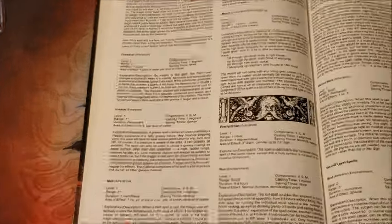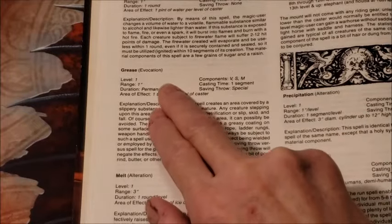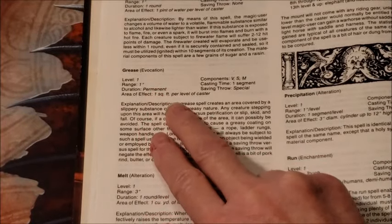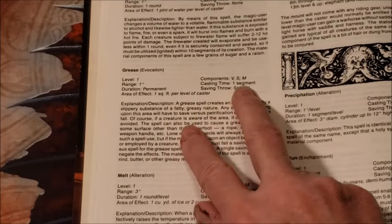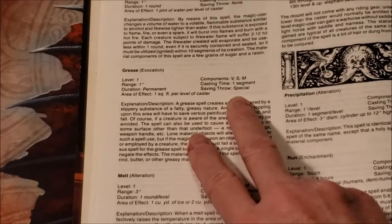We'll zoom in a little bit on it. So Grease is an evocation first level spell, range 10 feet, duration permanent, one square foot per level of caster, so at first level it's one square foot. Verbal, somatic, and material components, one segment casting time, and the save is special.